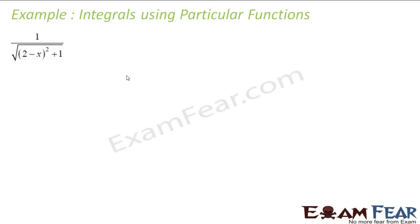This is an example: if you see 1 over √((2−x)² + 1), this is almost in that particular form. The only thing I am doing is putting 2 minus x as t. If I put 2 minus x equal to t, I get dt as minus dx.